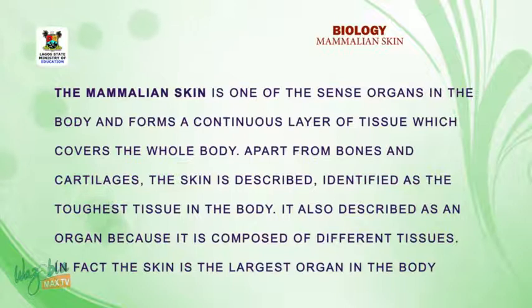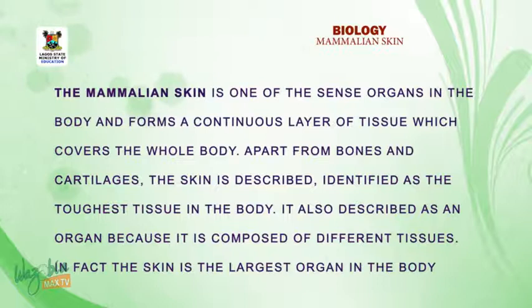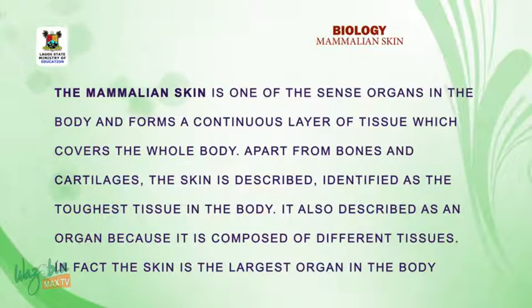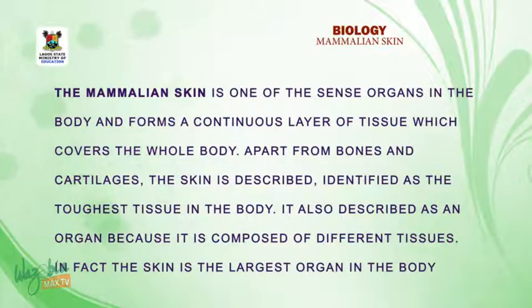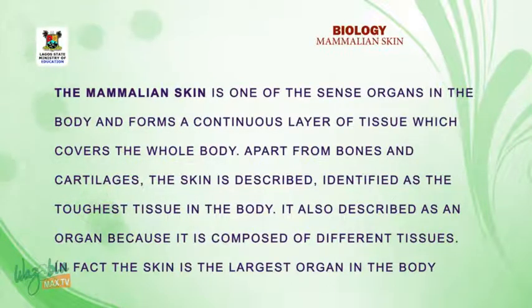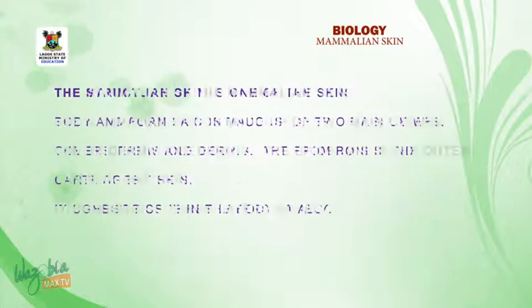The mammalian skin is one of the sense organs in the body and it forms a continuous layer of tissue which covers the whole body. Apart from bones and cartilage, the skin is identified as the toughest tissue in the body. It is an organ because it is composed of different tissues. In fact, the skin is the largest organ in the body.